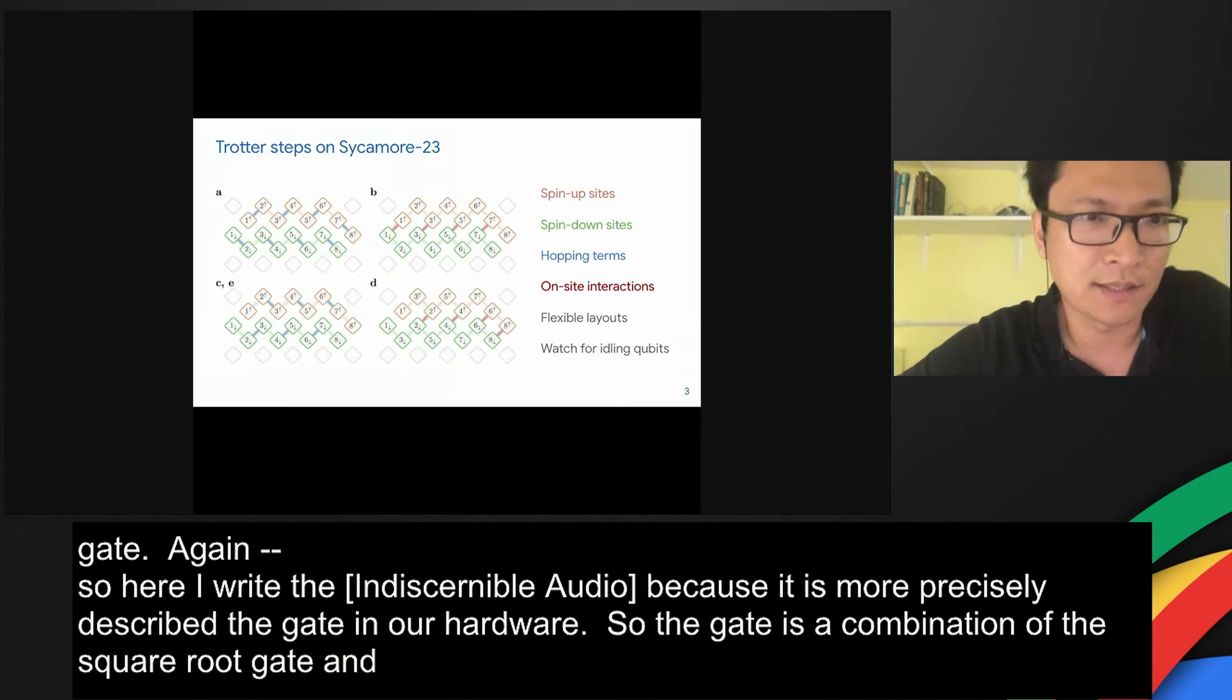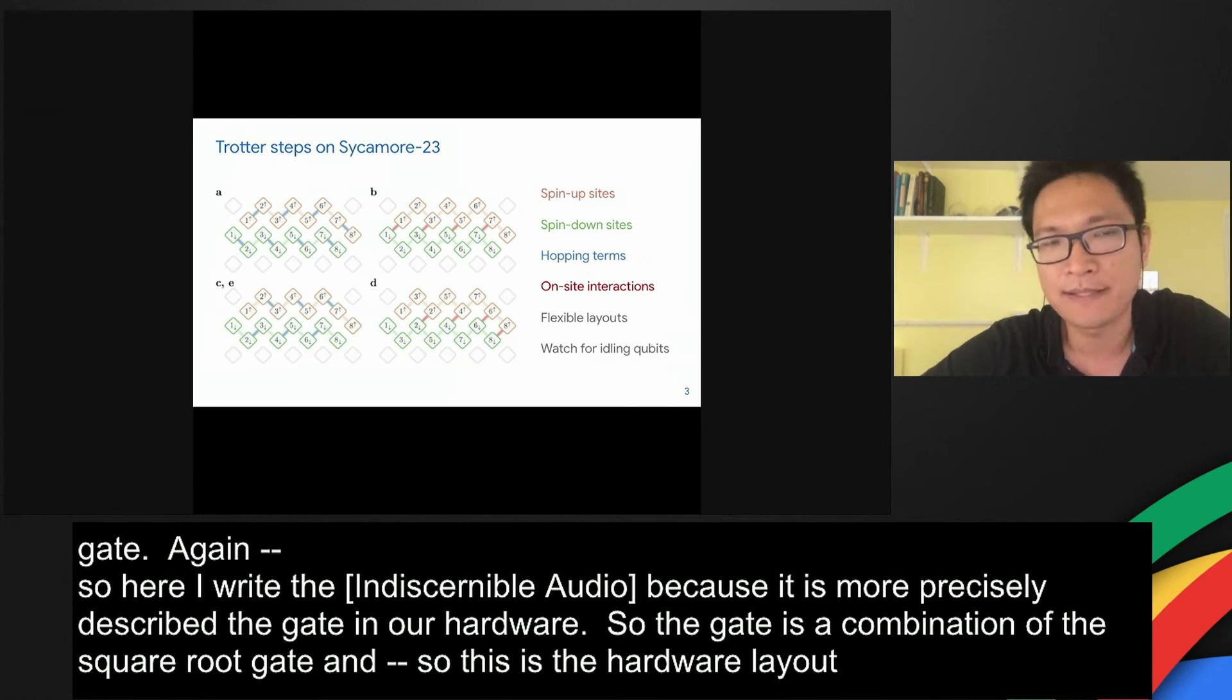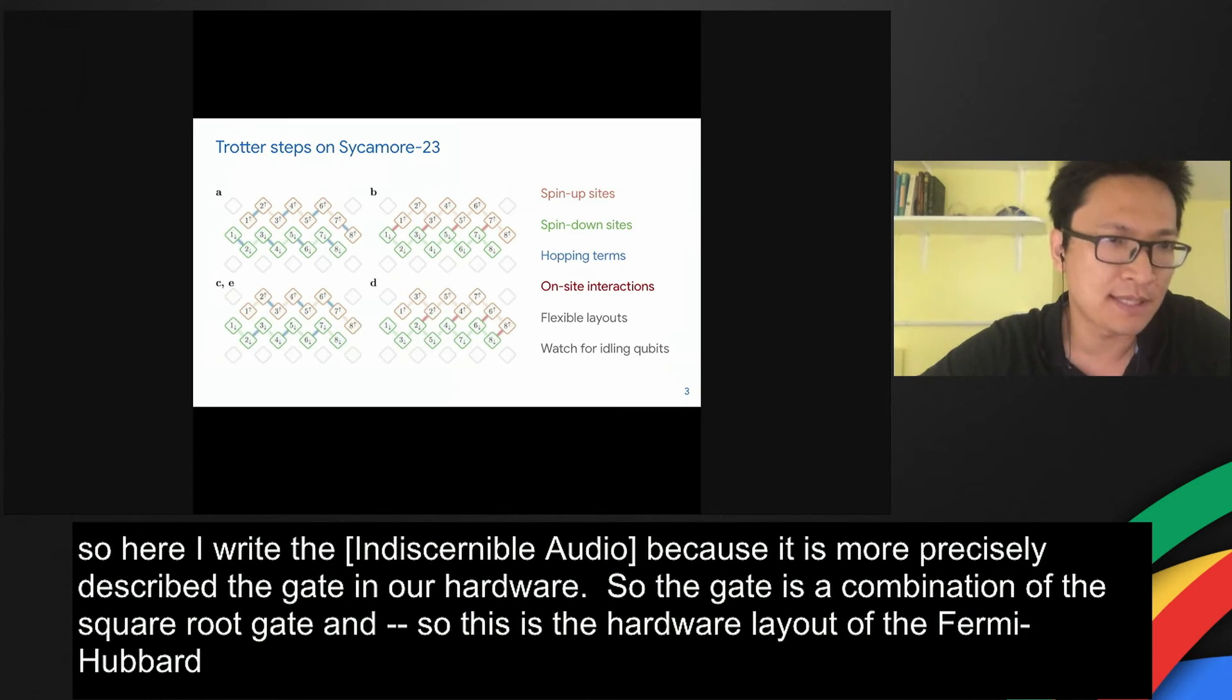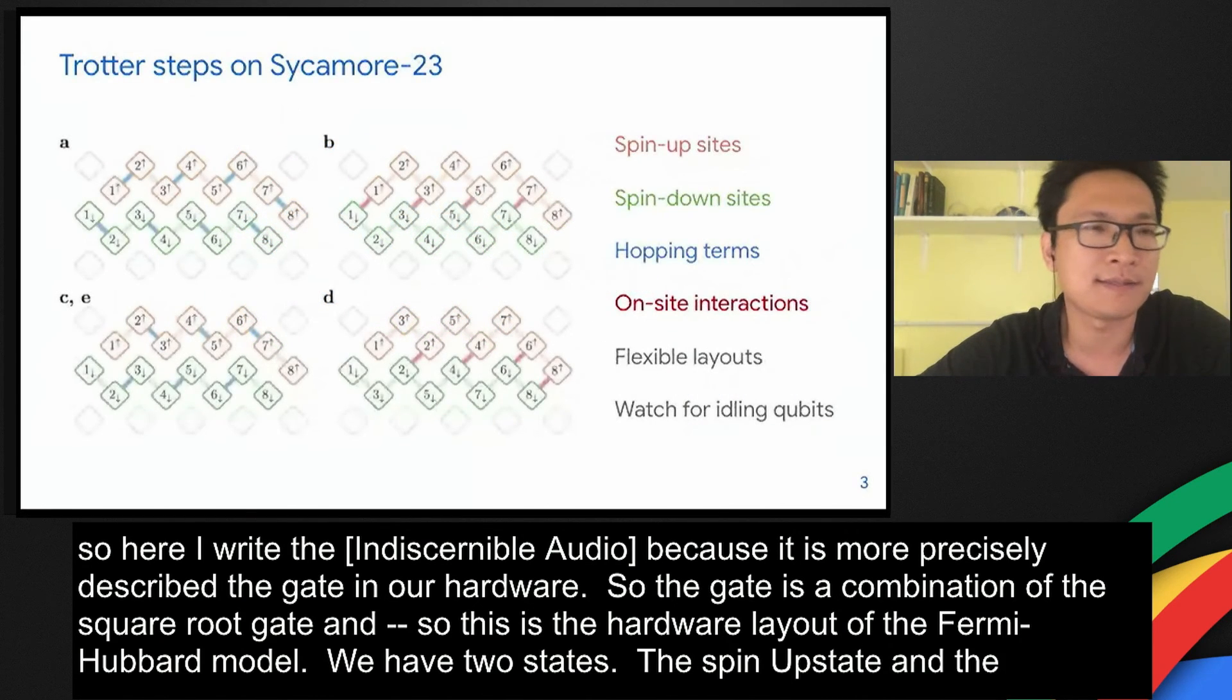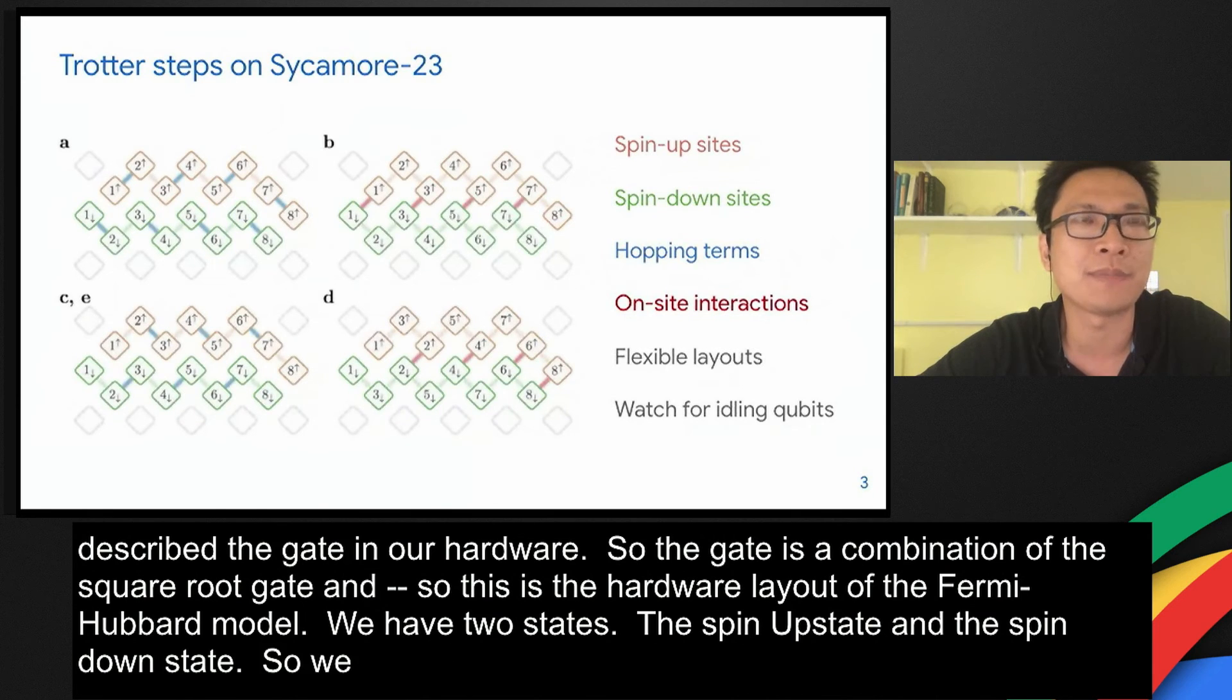This is the hardware layout of the Fermi-Hubbard model. In the Fermi-Hubbard model, we have two spin states, the spin-up state and the spin-down state. Here, the spin-up states are mapped to the orange spin chain, and the spin-down states are mapped to the green spin chain.